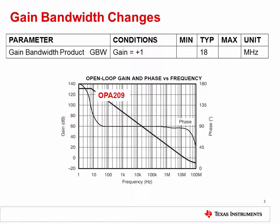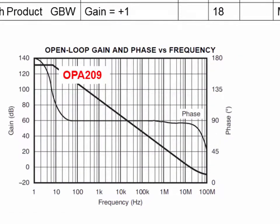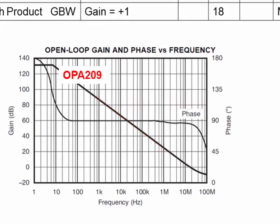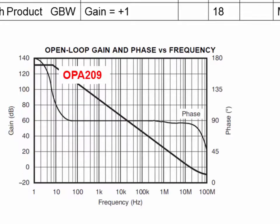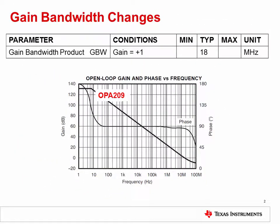We have discussed the gain bandwidth product in great detail. We know that it is only valid where the slope of the AOL curve is minus 20 dB per decade. Unfortunately, sometimes it is not obvious whether the gain bandwidth product is valid or not. Here we have the gain bandwidth product specification from the OPA209 data sheet. The typical gain bandwidth product is listed as 18 megahertz, given that the gain is 1 volt per volt. But what about for other closed loop gains? The open loop gain curve appears to be linear and decreasing at a constant rate of minus 20 dB per decade, so one might assume that the gain bandwidth product is valid for all closed loop gains. However, simulation and real world measurements will show that such an assumption is incorrect.